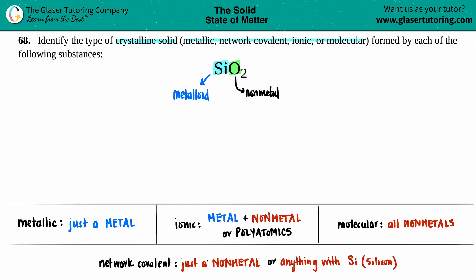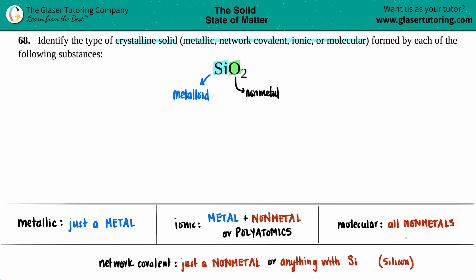The last type is a network covalent crystalline solid, where the substance is a single non-metal — like carbon — or anything with Si. When I say anything with Si, I mean silicon is the first element, followed by something else, whether there are two, three, or four of them. The silicon metalloid should be listed first.